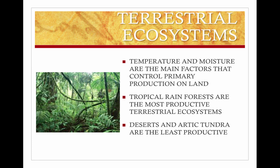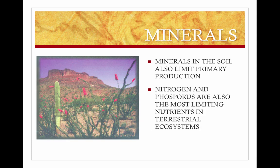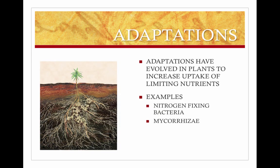In terrestrial ecosystems, temperature and moisture are the main factors controlling primary production on land. Tropical rainforests are the most productive terrestrial ecosystems, while deserts and Arctic tundra are the least productive. Minerals in the soil also limit primary production, and nitrogen and phosphorus are the most limiting nutrients in terrestrial ecosystems. However, plants have evolved adaptations to increase their uptake — for example, symbiotic nitrogen-fixing bacteria in the roots convert atmospheric nitrogen into a usable form, and mycorrhizae are fungi that live in roots and increase uptake of nutrients and water.